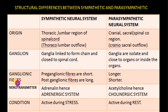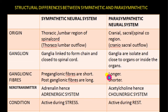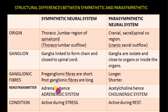Comparing the ganglionic fibers: the pre-ganglionic fibers of the sympathetic neural system are short and post-ganglionic fibers are very long. It is entirely opposite in the parasympathetic neural system — pre-ganglionic fibers are very long and post-ganglionic fibers are short.